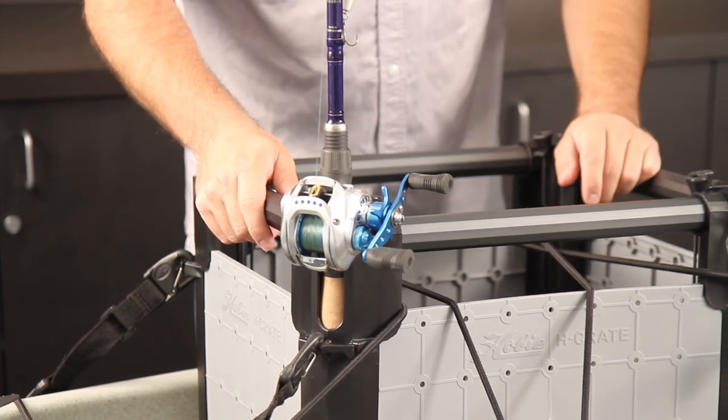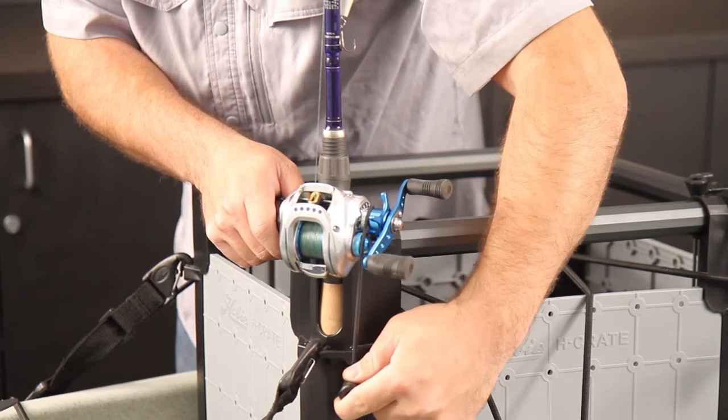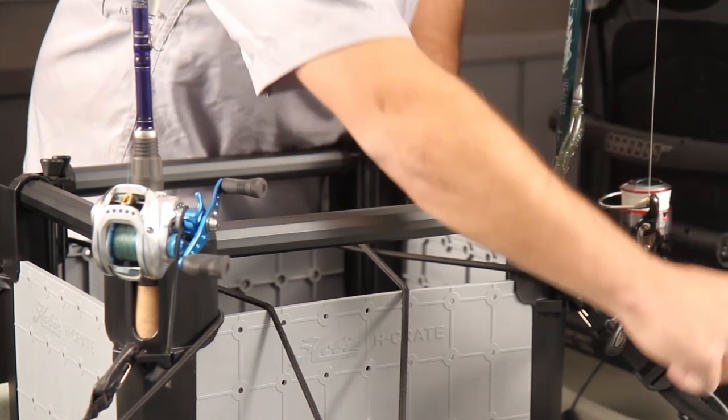Securing your rod using the integrated bungee system is simple. Simply pull up on the tab, pull it down, and insert the line through the slot. It works equally well for spinning reels.